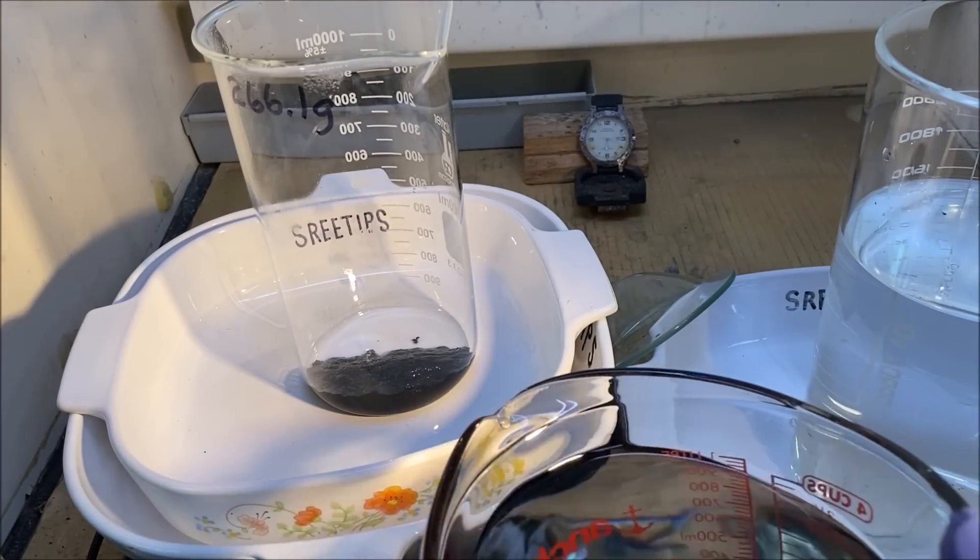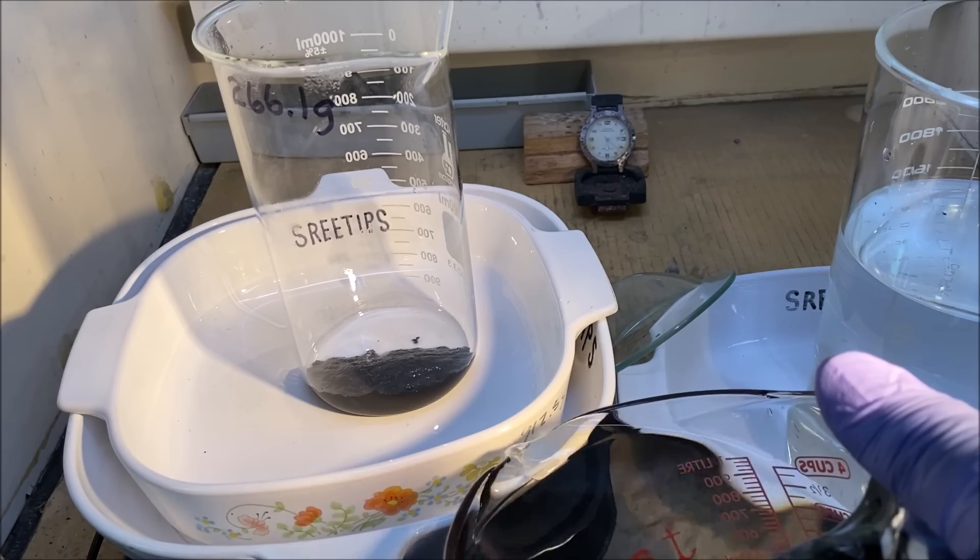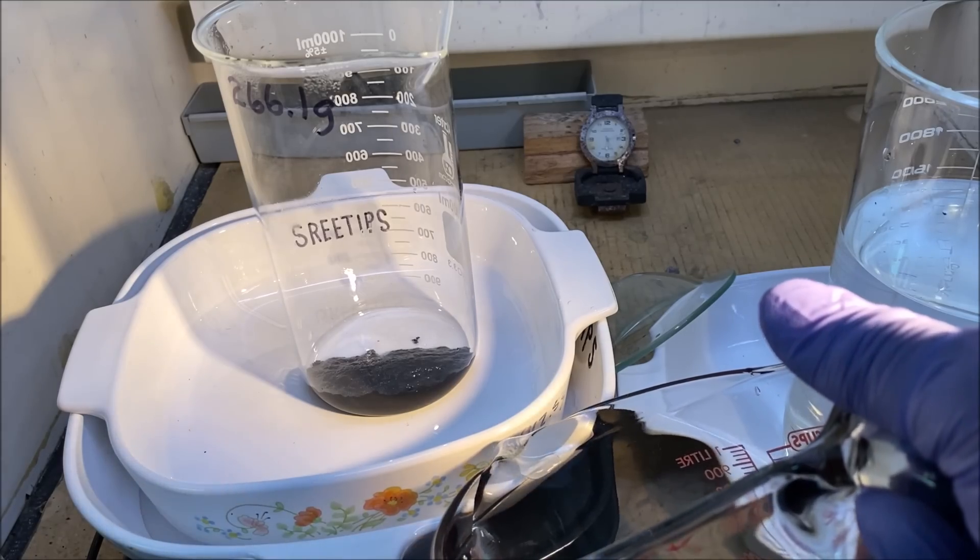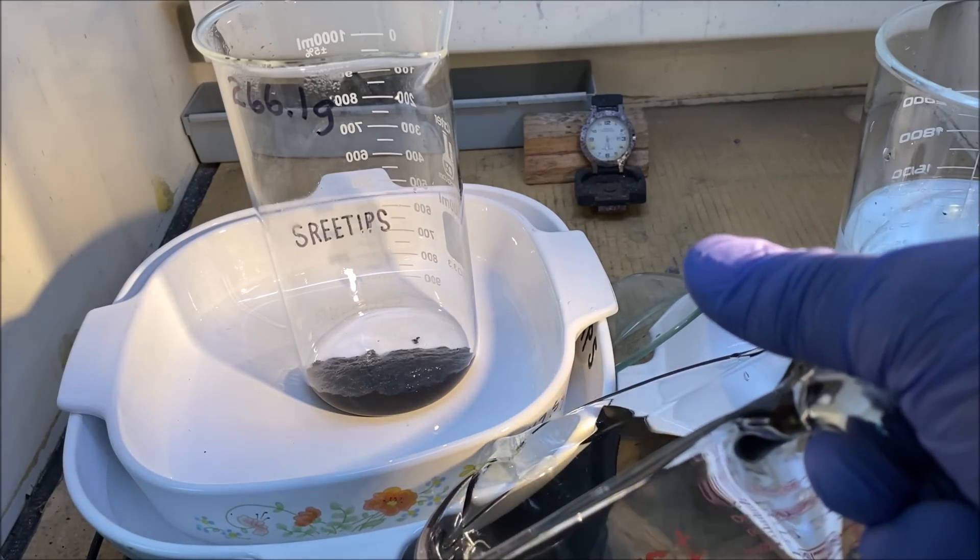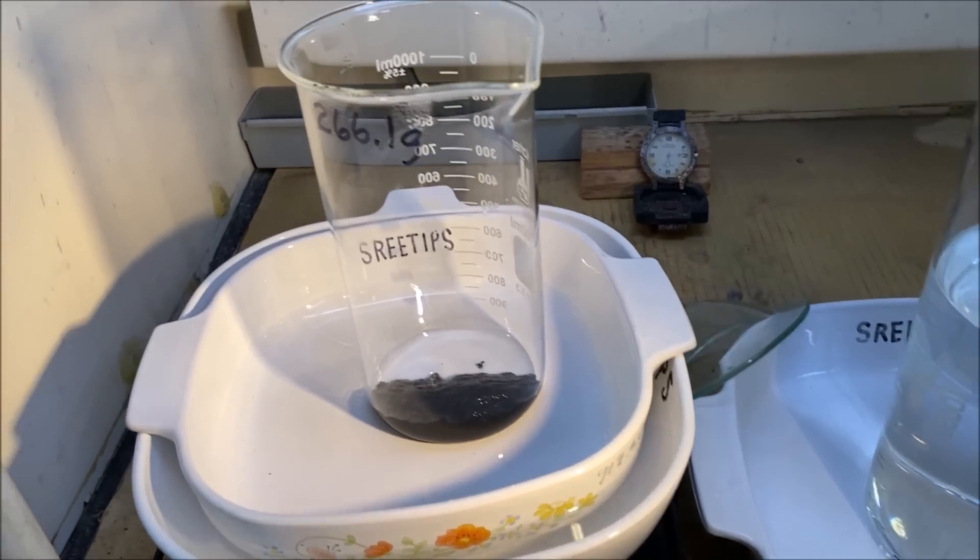Now we're going to fill up our container with some water. Add some heat to it and use a water bath to dry the black PGM powders.